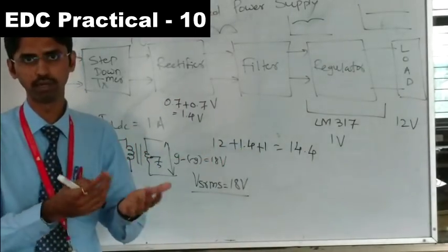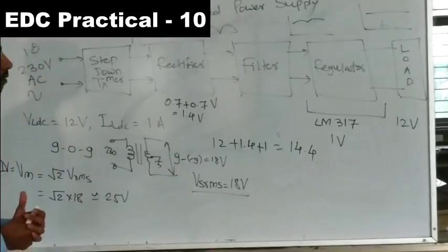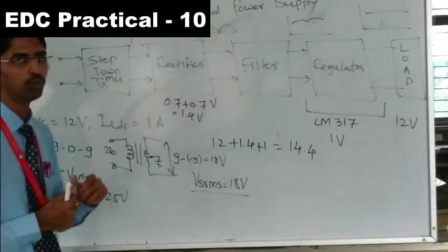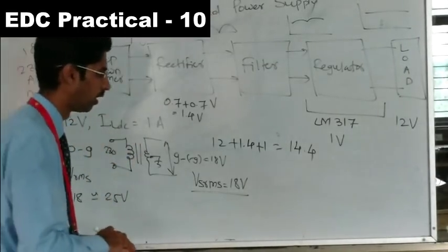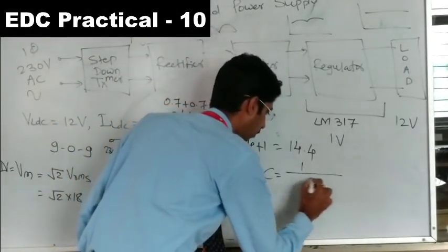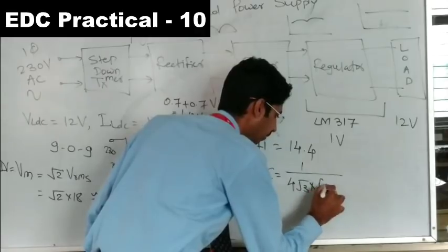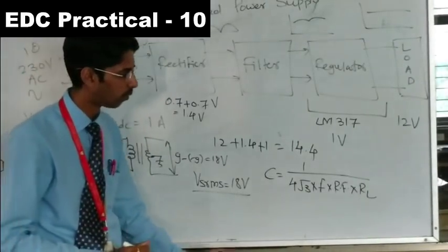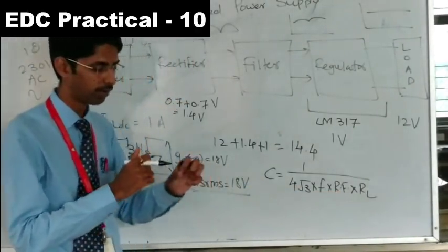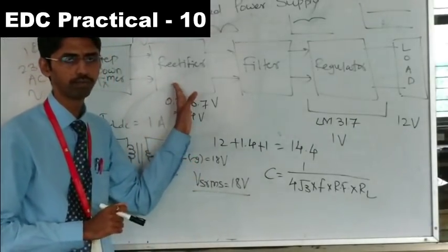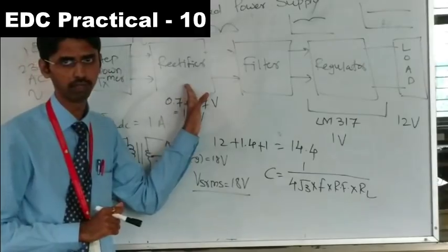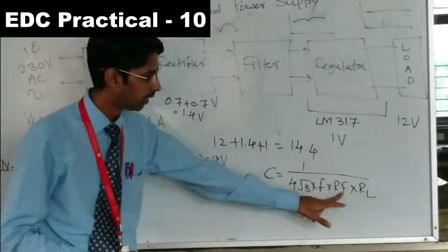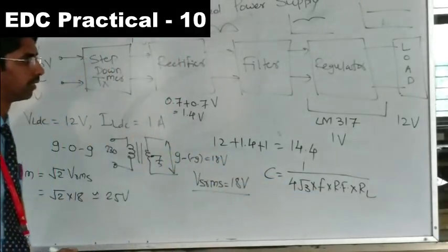For the filter, we use an electrolytic (polarized) capacitor, chosen for its ready availability and cost-effectiveness. The capacitor value is given by the formula: C = 1 / (4√3 × F × ripple factor × RL). The ripple factor for a bridge rectifier is 48%, which is much less than the 121% for a half-wave rectifier. RL is the load resistance.